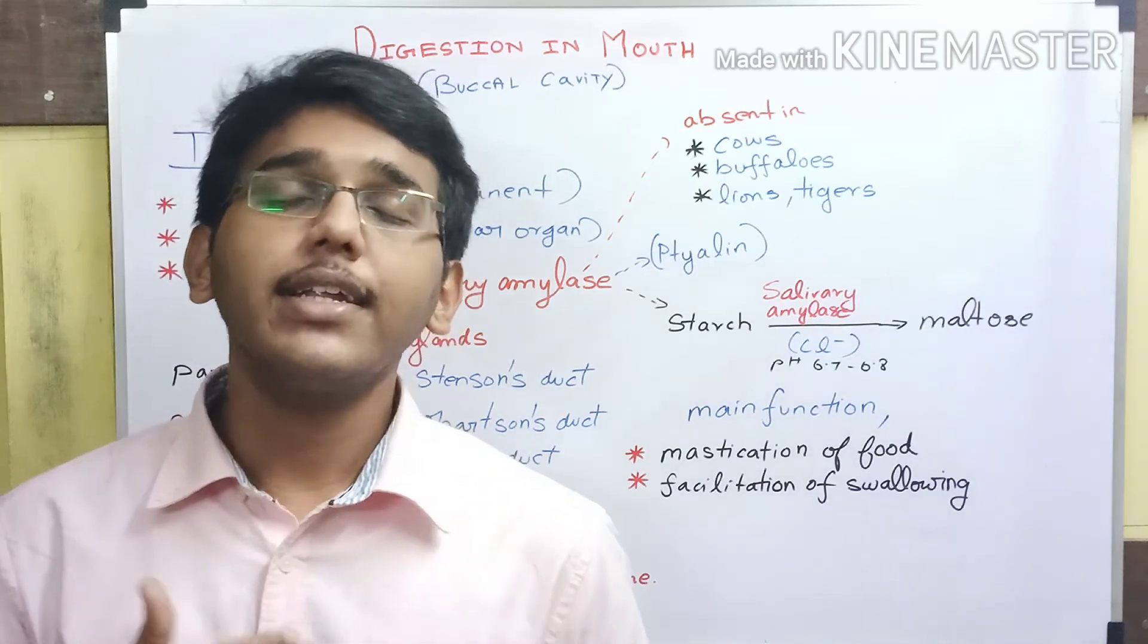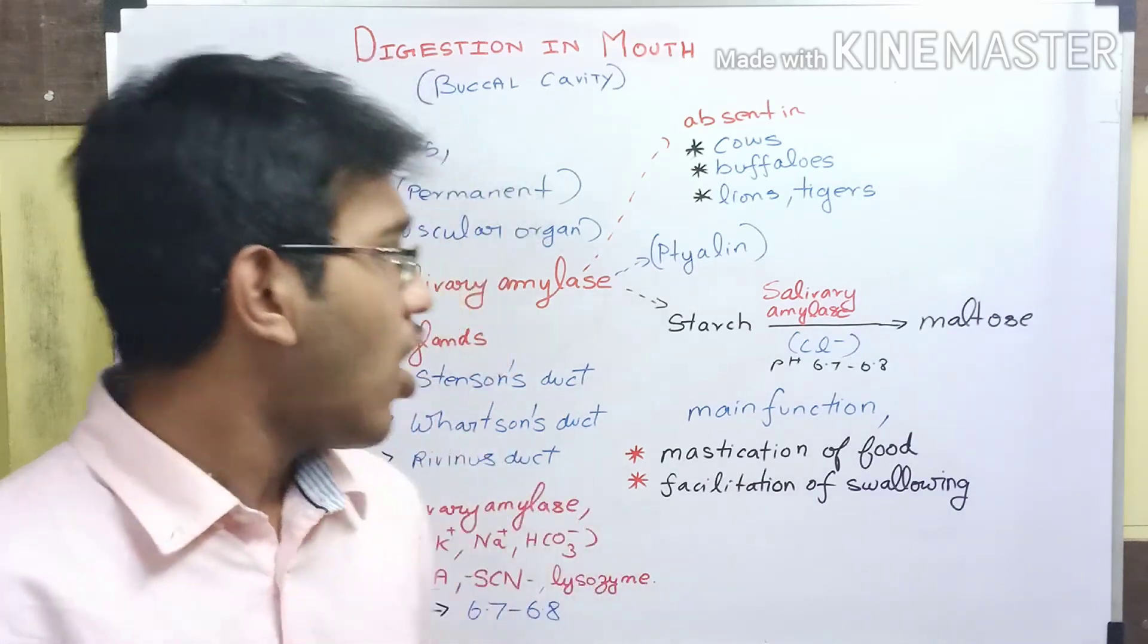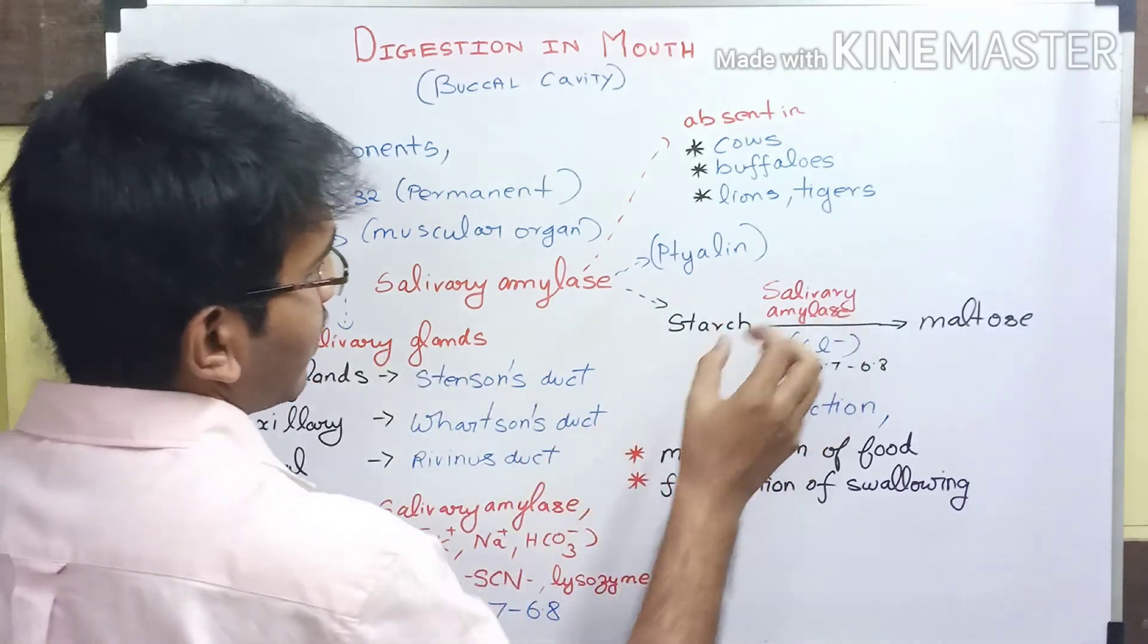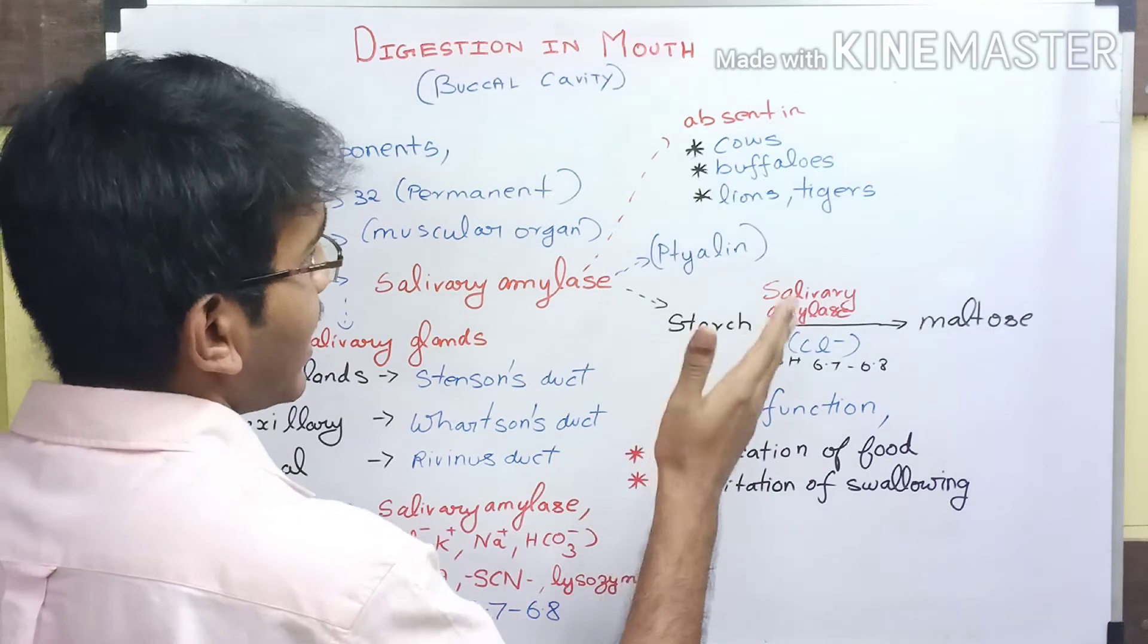These ions help in the maintenance of the optimum pH of saliva, which helps in better activity of the salivary amylase enzyme.